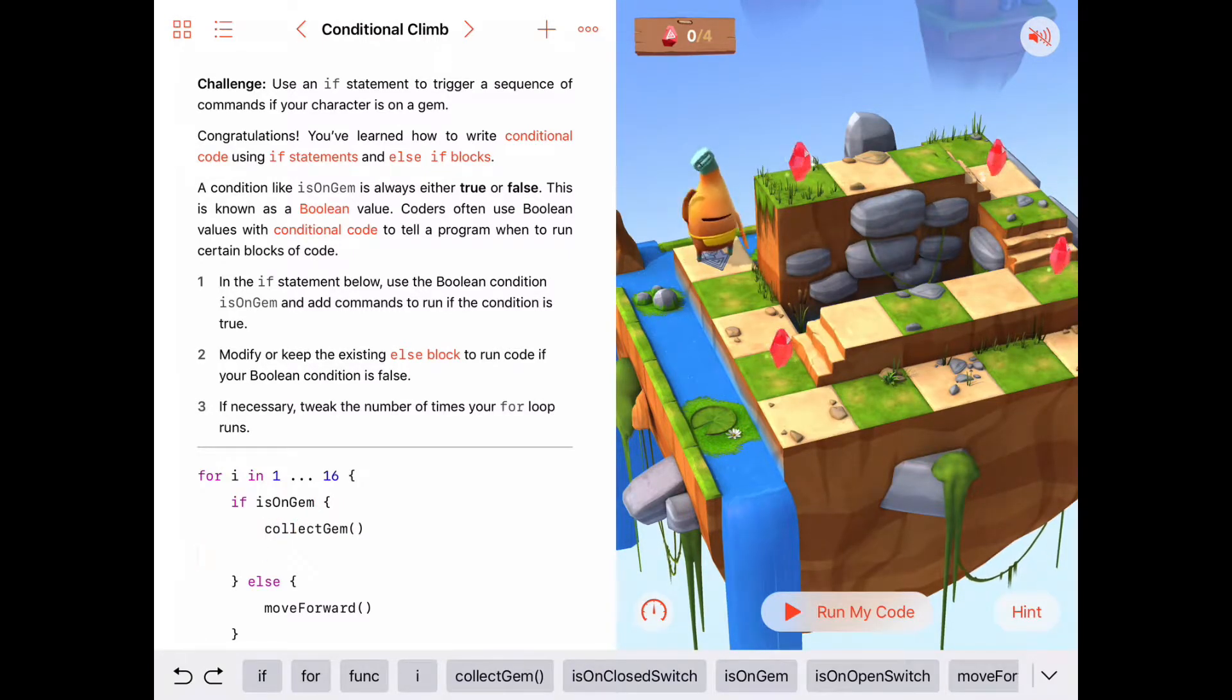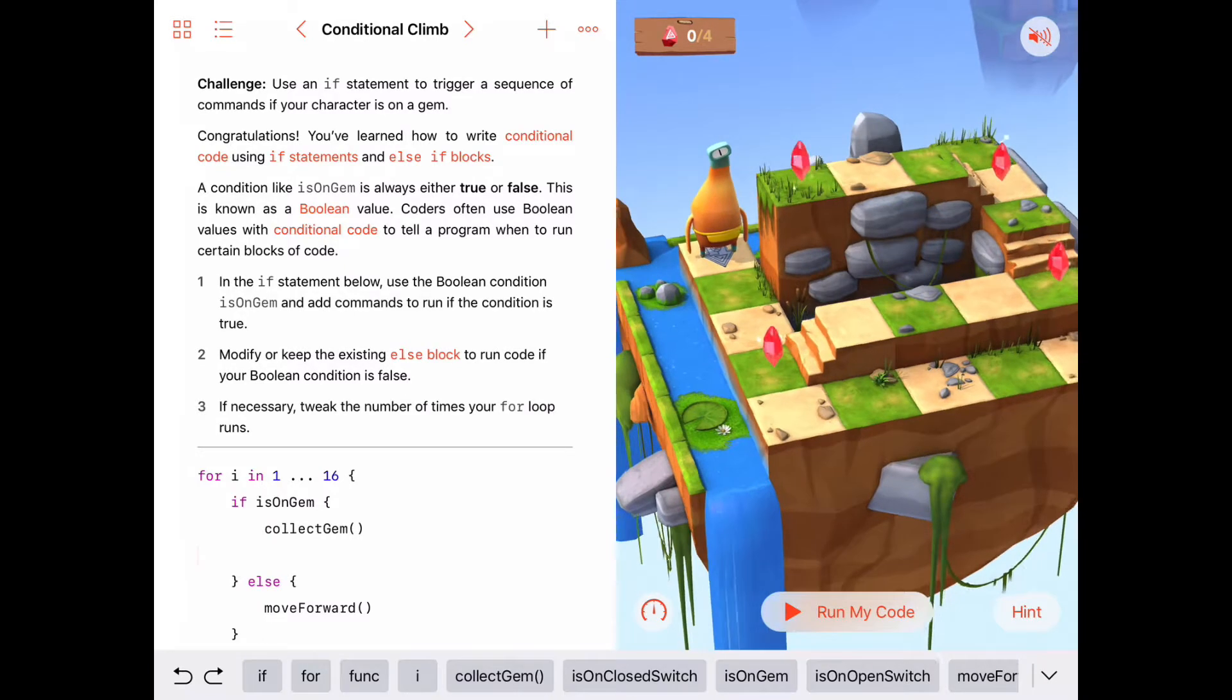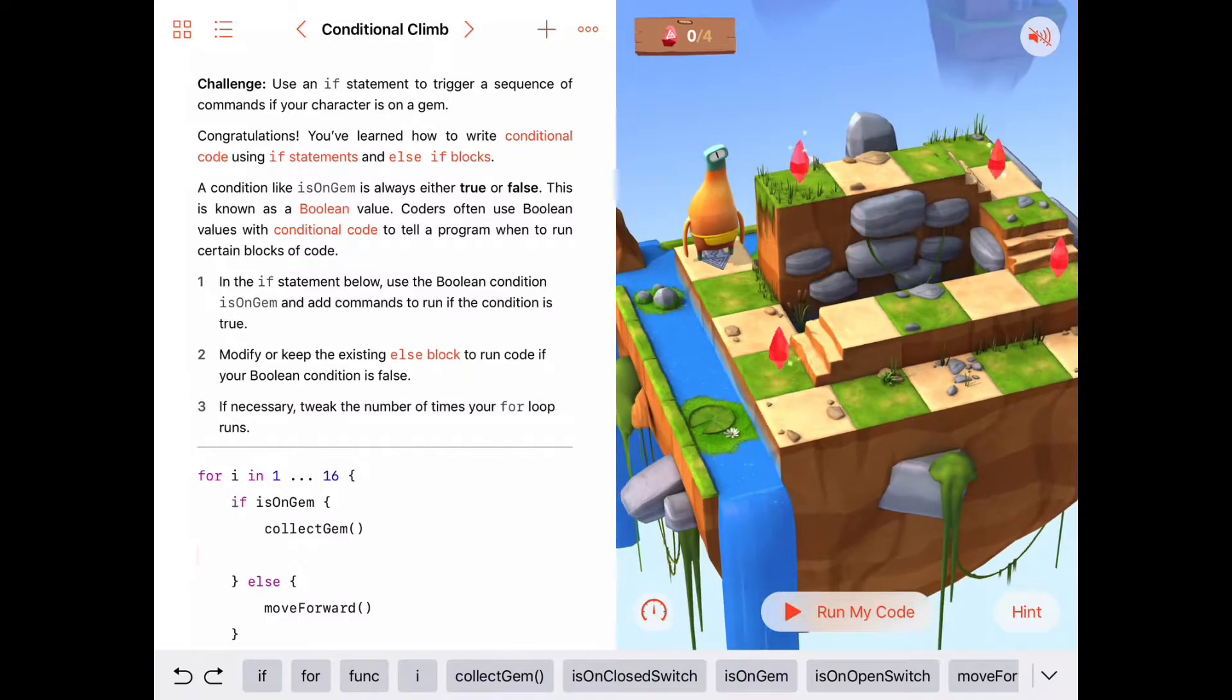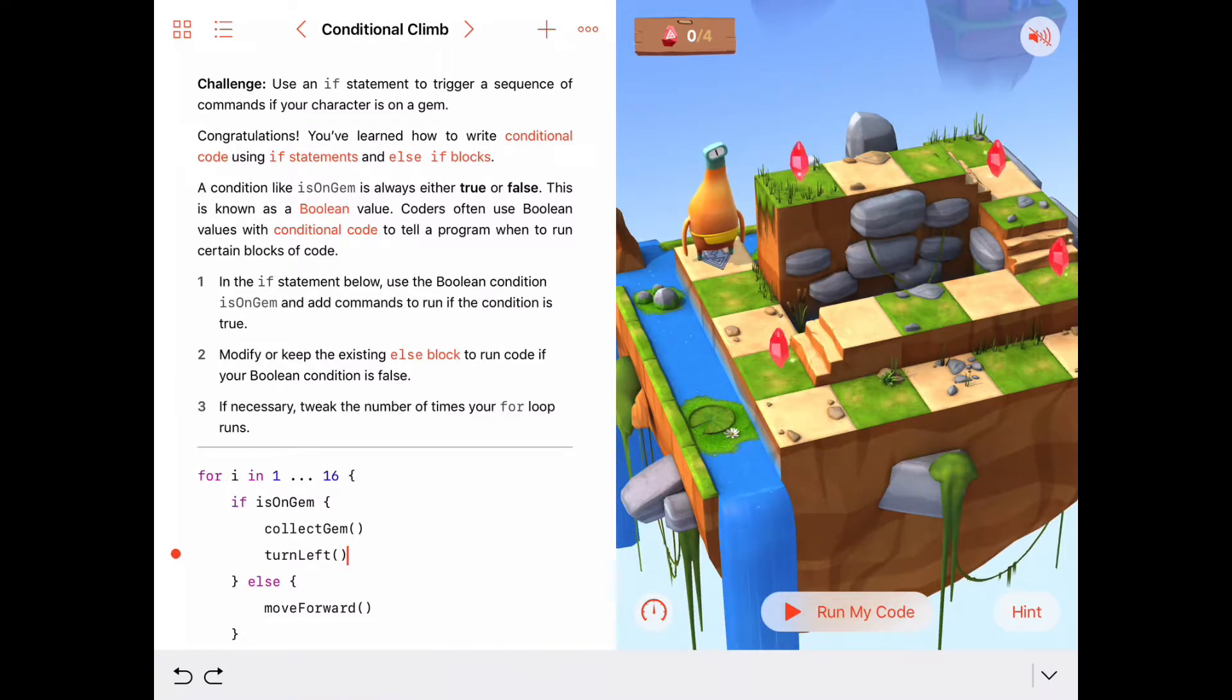But we also said that these gems are signaling to us that that's the time when Byte needs to turn to the left as well. So let's do that as well: turn to the left. So he'll be facing toward the next gem.